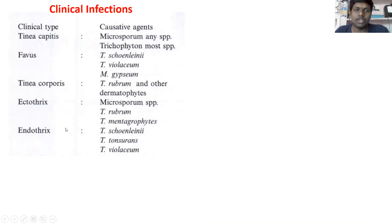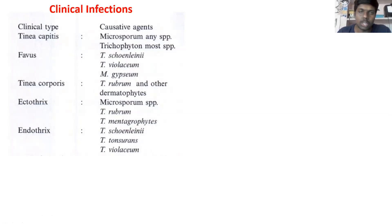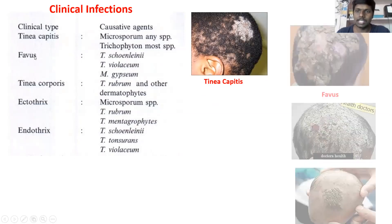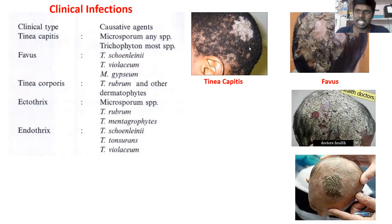Let me show you images of each clinical condition. Tinea capitis is a fungal infection occurring on the head — you can see a patchy area of fungal infection on the scalp. This is caused by Microsporum species and Trichophyton species. Favus is much more severe than tinea capitis, and it is caused by T. schoenleinii, T. violaceum, and T. verrucosum.